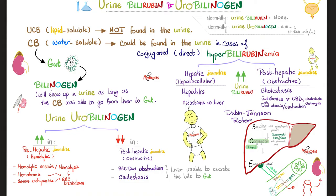Now let's talk about urobilinogen in the urine. For urobilinogen to exist, conjugated bilirubin must first be converted into urobilinogen in the gut. If there is an obstruction between the liver and the gut, urobilinogen will be lower than expected — such as in obstructive jaundice, bile duct obstruction, or cholestasis. But if there is pre-hepatic jaundice, there will be tons of unconjugated bilirubin. The liver works hard to conjugate all of it, and if the path is open, it all reaches the intestine, gets converted into urobilinogen, and you see more urobilinogen in the urine — such as in any cause of hemolysis, hemolytic anemia, drug-induced hemolysis, hematoma, or severe ecchymosis.